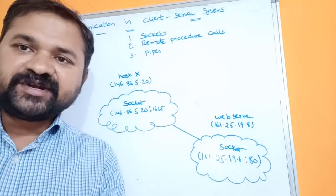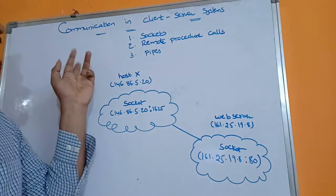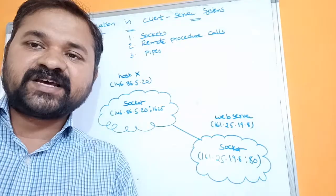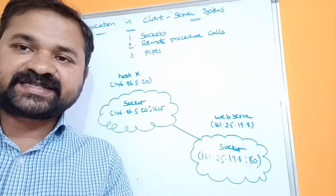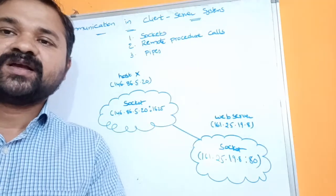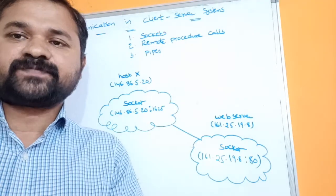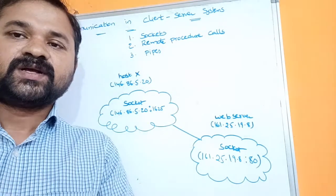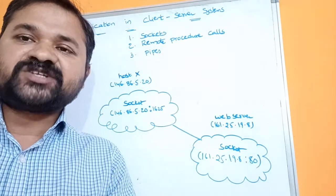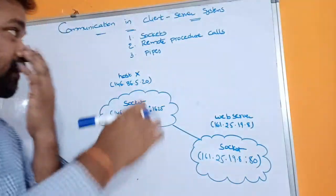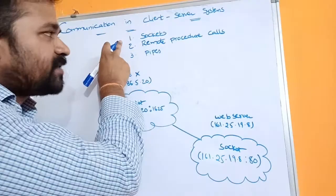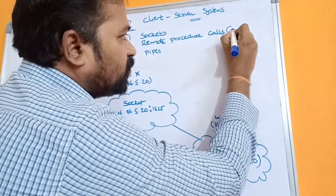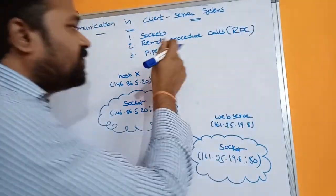In this video we are going to discuss about communication in client-server systems. We know what a client-server system is — the client sends a request to the server, the server processes the request and provides the corresponding response to the client. Here the client-server communication is done in three ways: the first one is using sockets, the second one using RPC (remote procedure calls), and the third one using pipes.